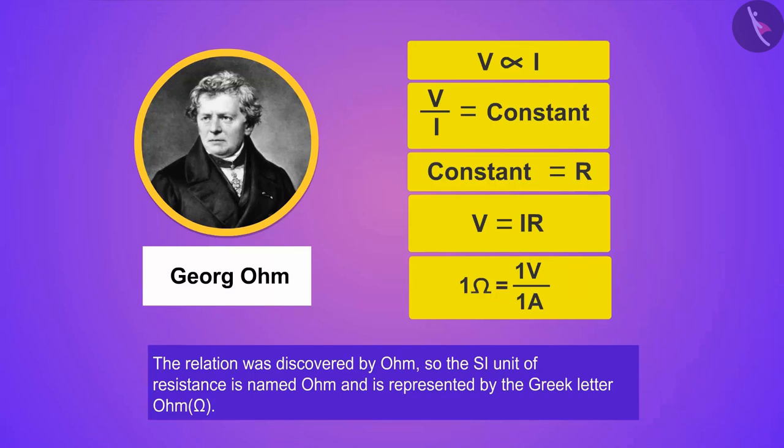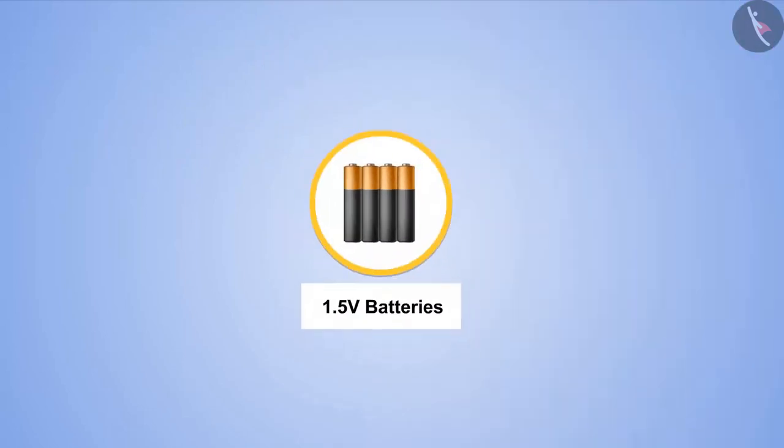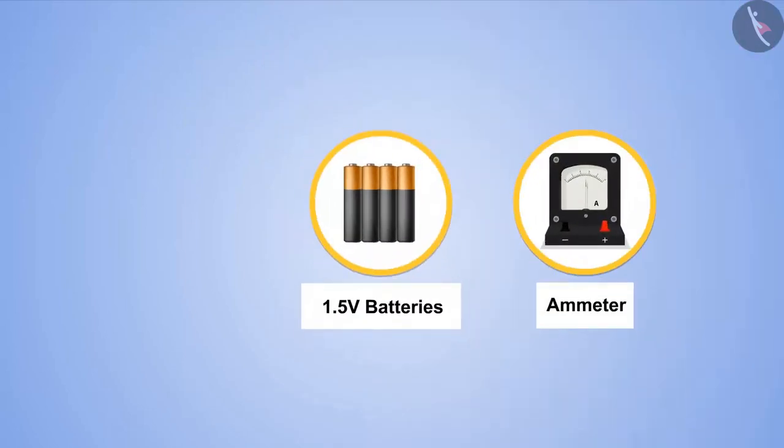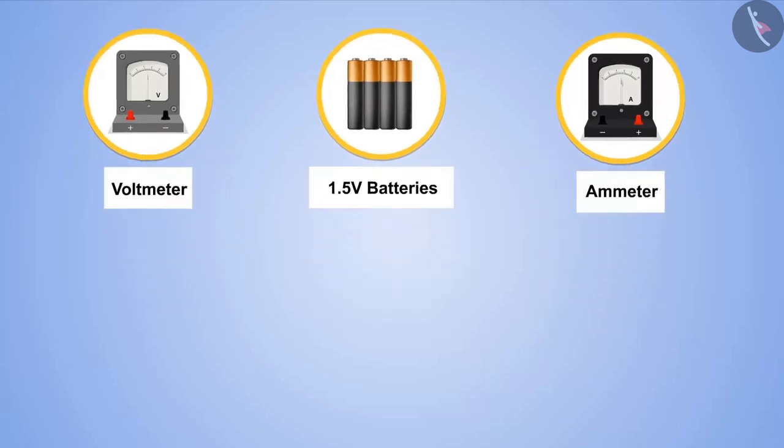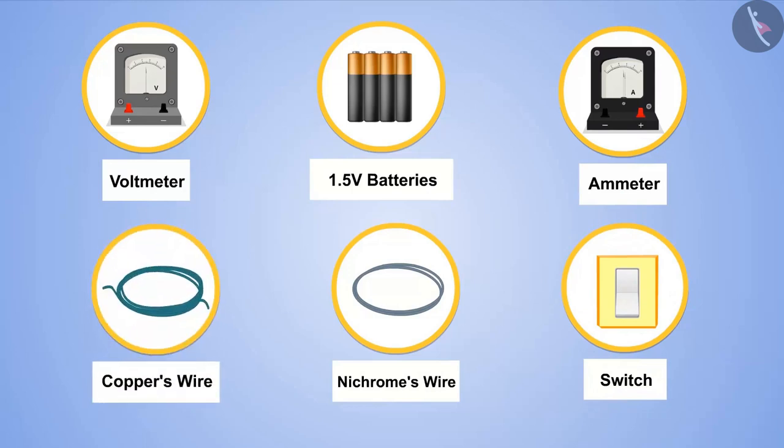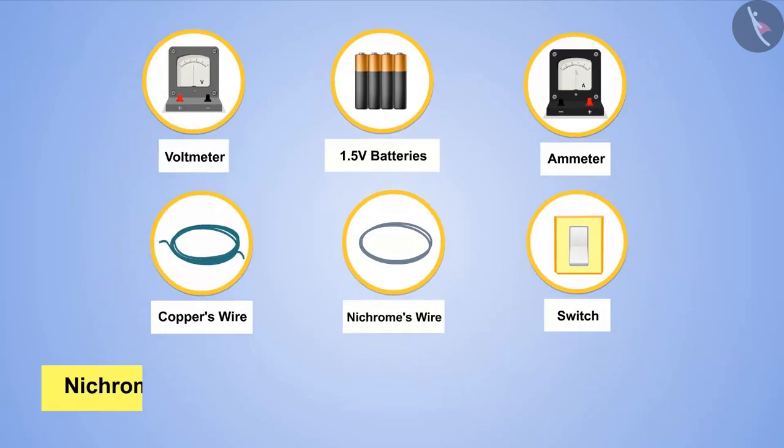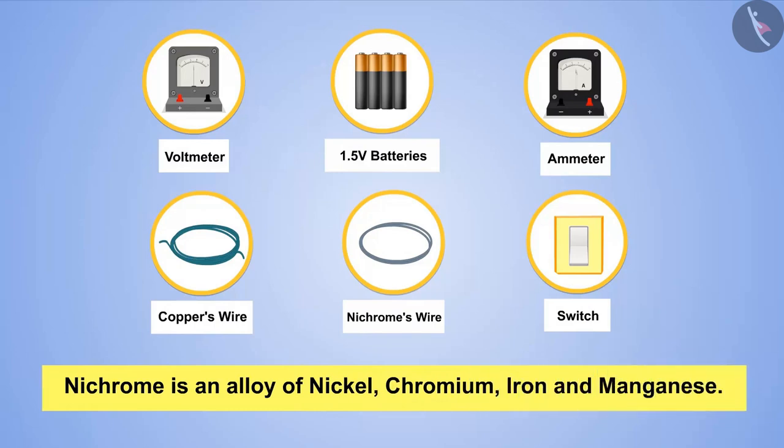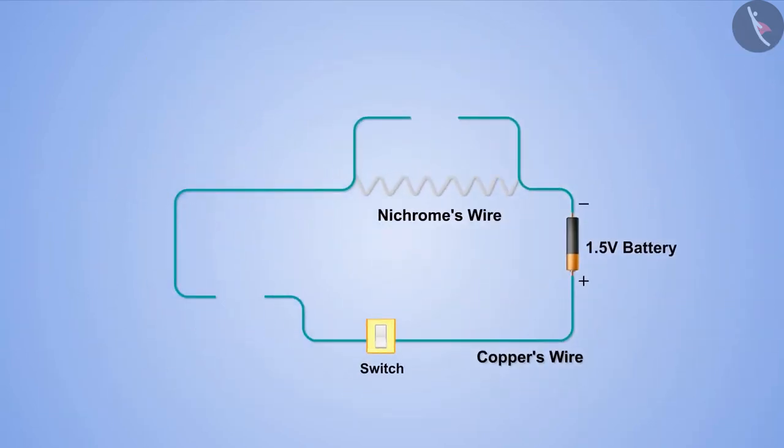Now let's perform an activity to prove Ohm's law. To perform this activity we need four 1.5 Volt batteries, an ammeter, a voltmeter, and a half-meter long nichrome wire that will act like a resistor here, and a switch and copper wires to connect the circuit. Nichrome is an alloy of Nickel, Chromium, Iron, and Manganese. Connect the circuit in this fashion.